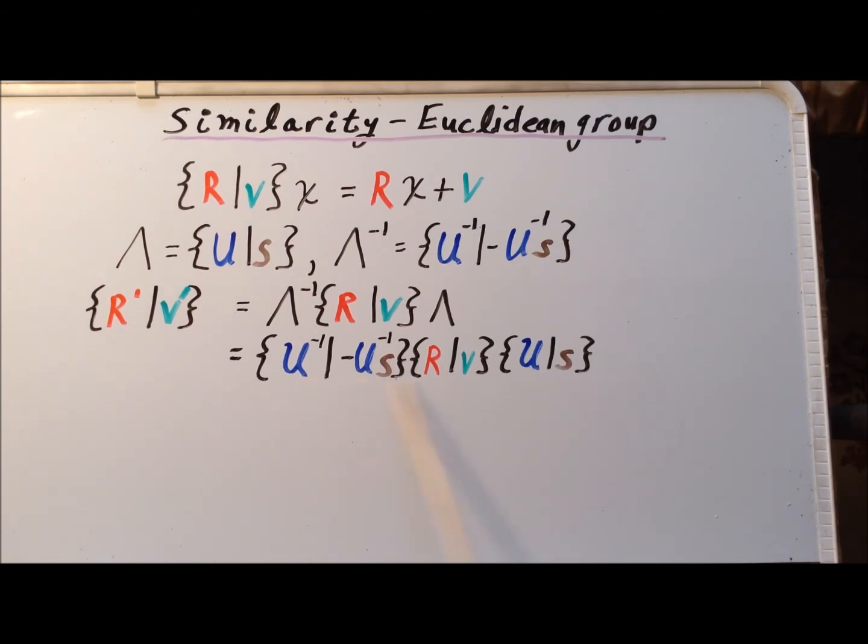Then in the next line, we simply written down the explicit forms for lambda to the minus 1, which is U to the minus 1 minus U to the minus 1 S. We have our R slash V in the center, followed by the lambda operator, which is U slash S.